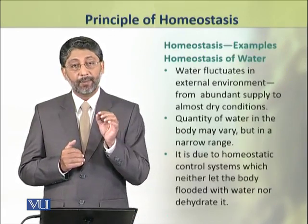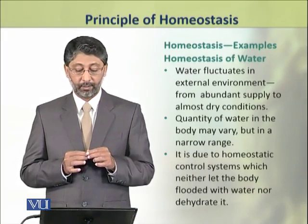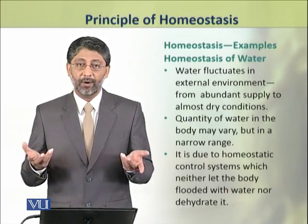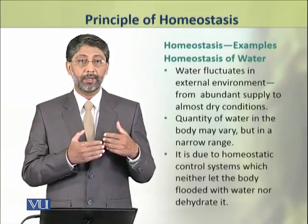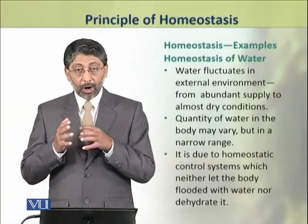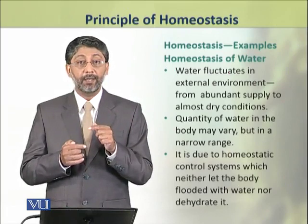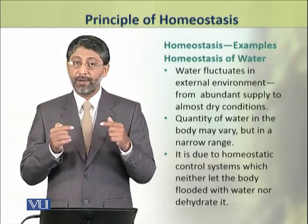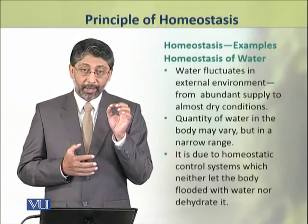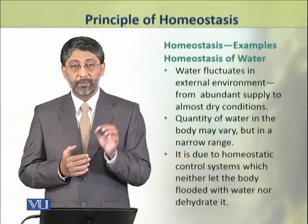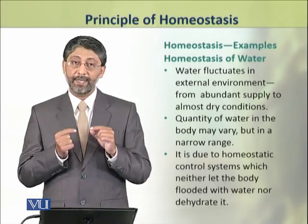We shall take some examples of homeostasis. First, we shall see how homeostatic systems for water work. Water fluctuates in the environment — there may be abundant supply or totally dry conditions. However, the quantity of water in the body may vary but only within a very narrow range. This maintenance of a narrow range is because of homeostatic control systems that neither let the body become flooded with water nor dehydrate it completely.